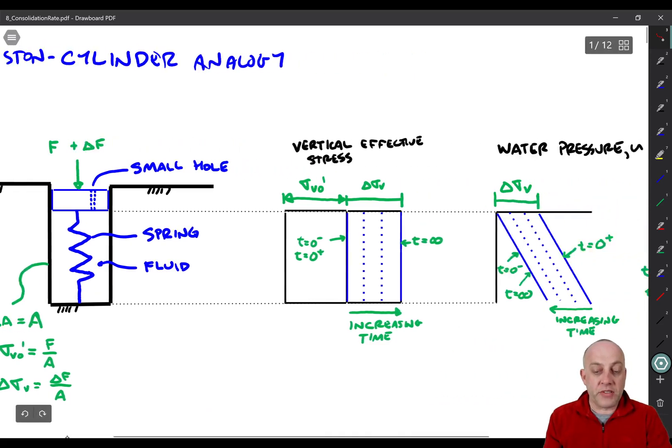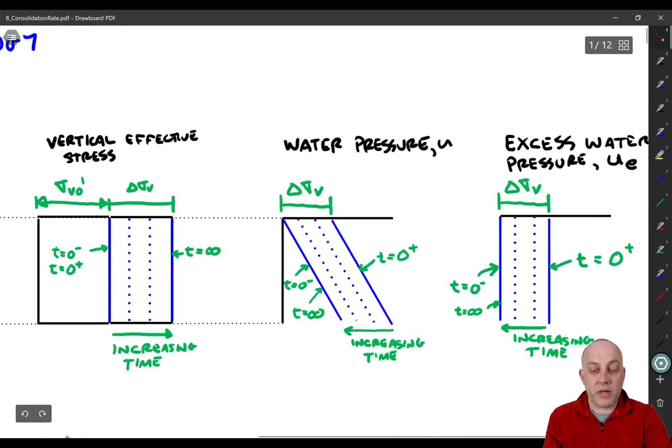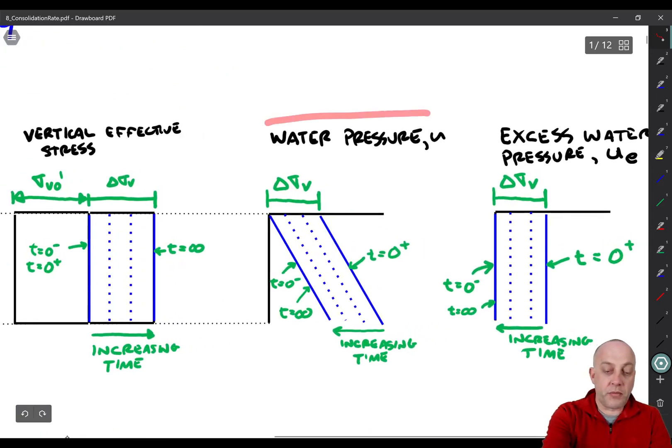So if we look at what happens, let's focus on the water pressure. Okay, what I'm going to do here is plot water pressure versus depth. And we'll assume it's hydrostatic, so the slope of this line would be the unit weight of water, this pressure versus depth.